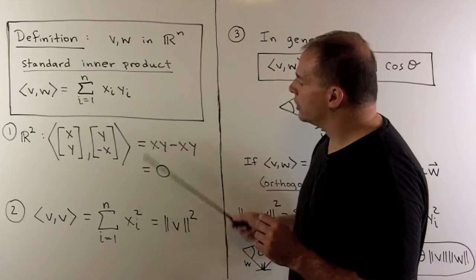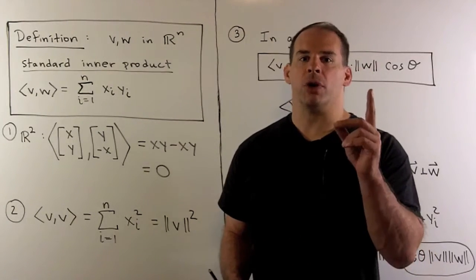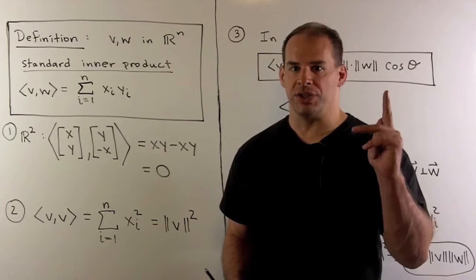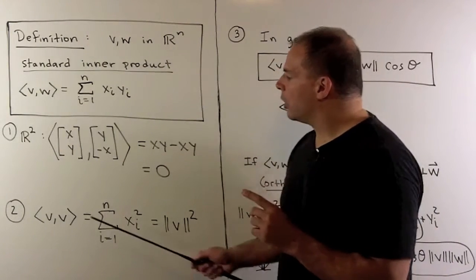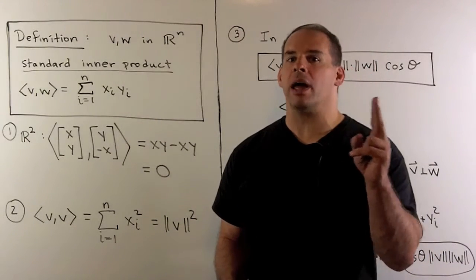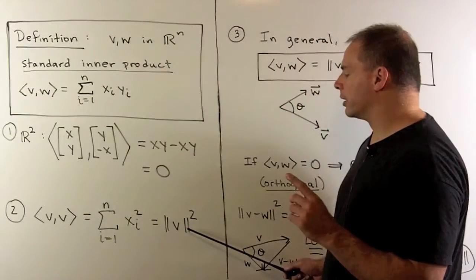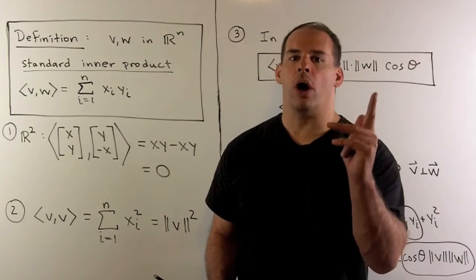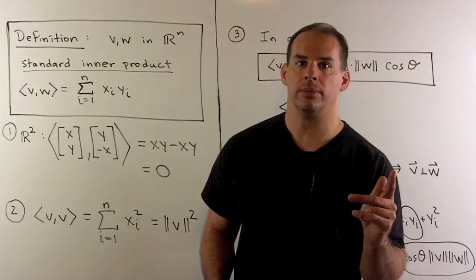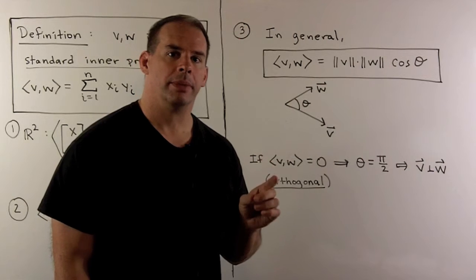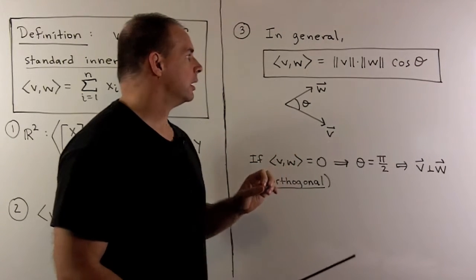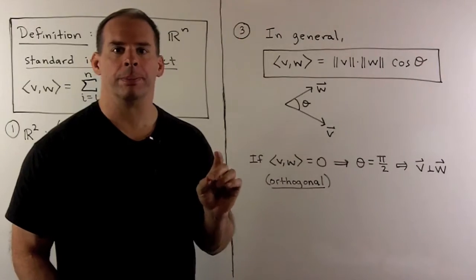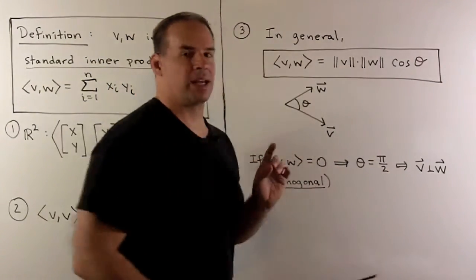Here we see two extremes. On the one hand, if our first vector is not going in the direction of the second vector at all — if they're at a right angle — then the inner product is equal to zero. On the other hand, if our first vector is going in the same direction as the second vector and by the same amount, we get the length squared. So the inner product measures how much one vector points in the direction of the other. That idea is made precise by the formula: the inner product of v and w equals the length of v times the length of w times the cosine of theta, where theta is the angle between them.